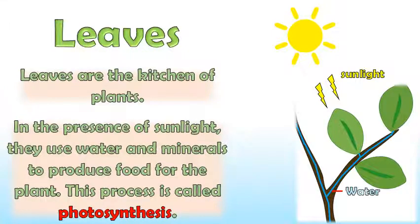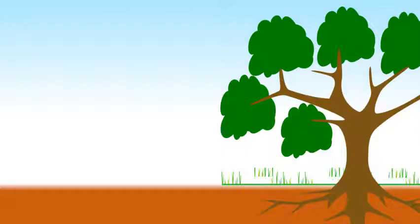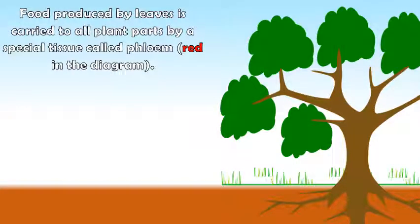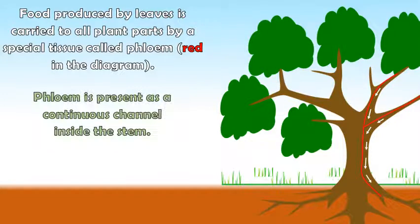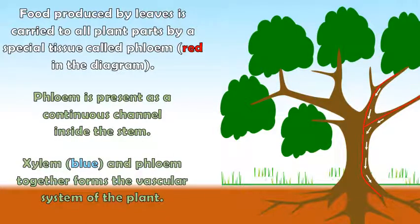Food produced by leaves is carried to all plant parts by a special tissue called phloem, shown in red in the diagram. Phloem is present as a continuous channel inside the stem. Xylem, shown in blue in the diagram, and phloem together form the vascular system of the plant.